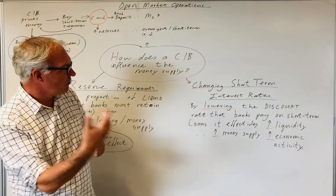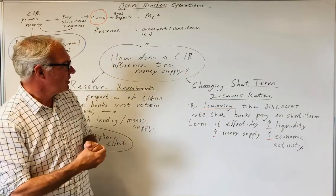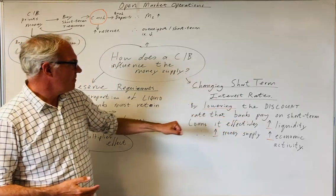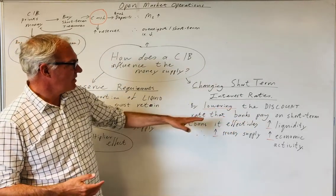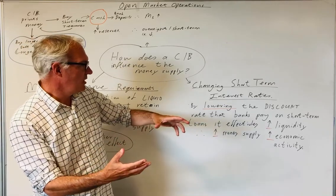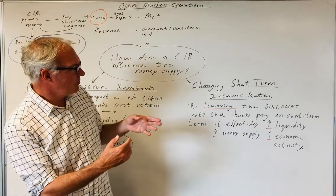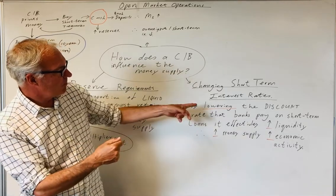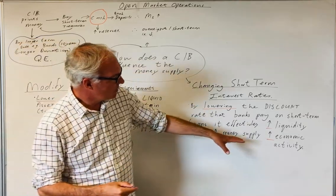By lowering the discount rate, for example, they're effectively increasing liquidity and therefore banks are able to borrow more cheaply in the short term. Therefore, that increases money supply and increases economic activity.